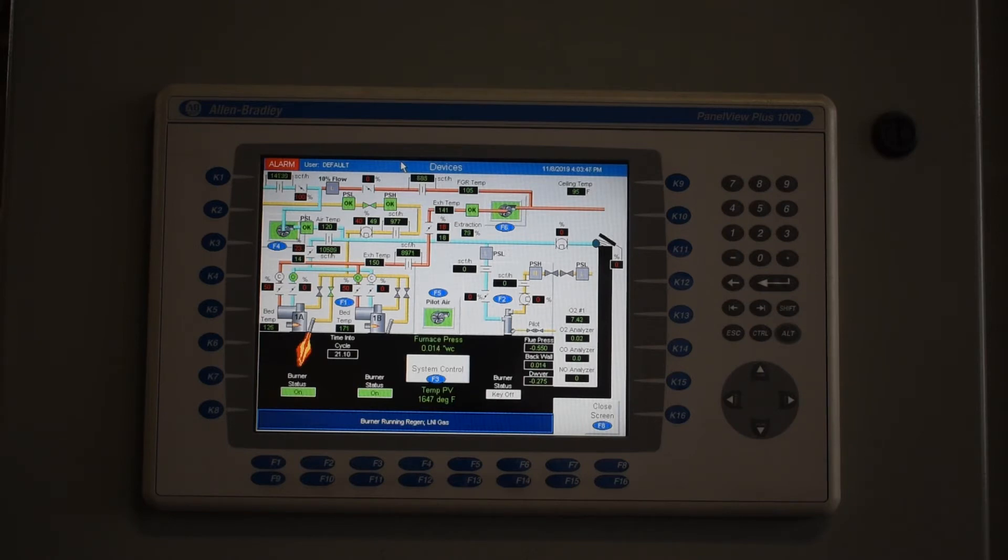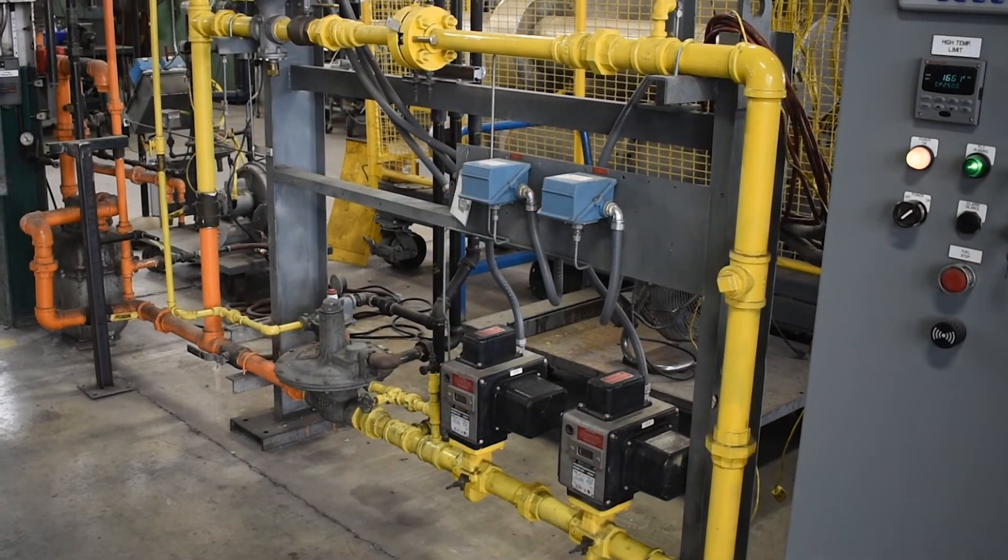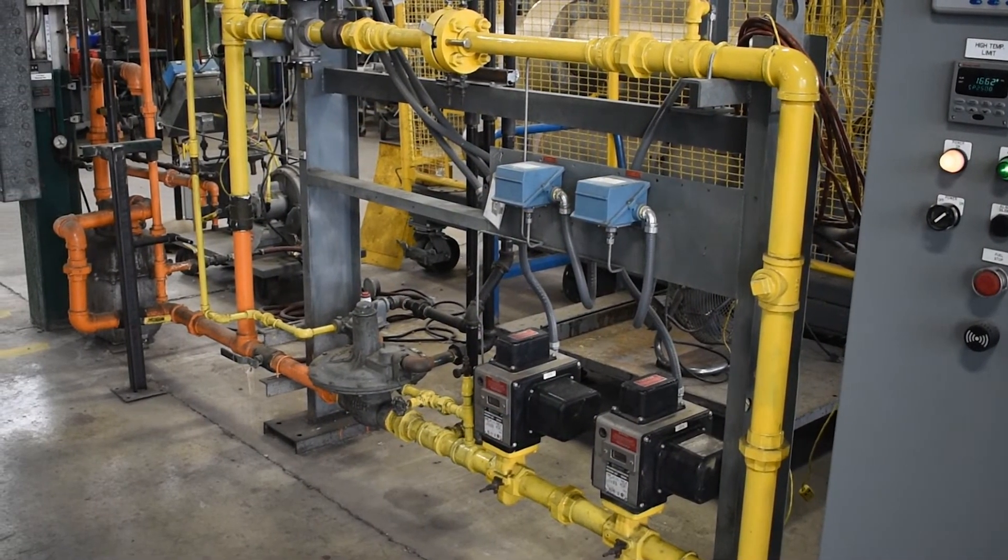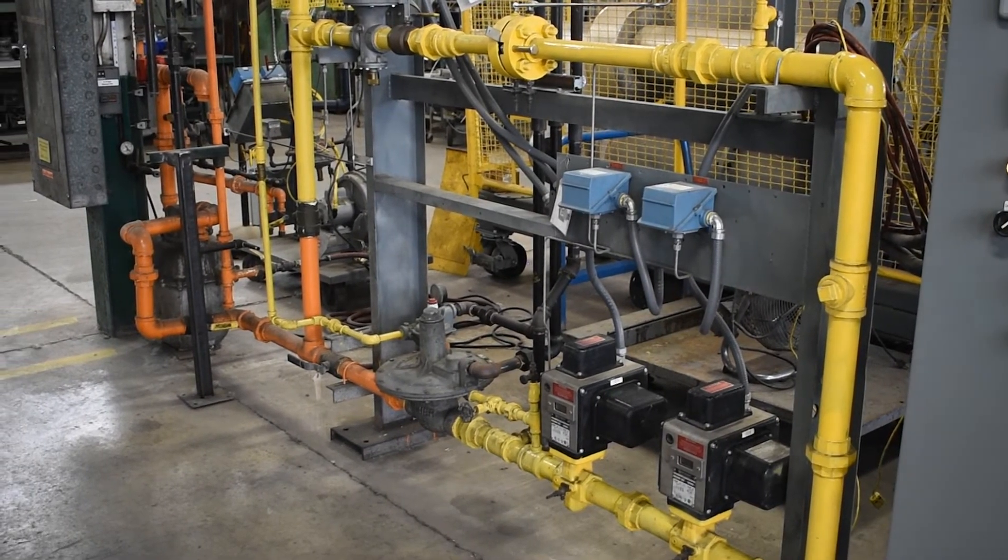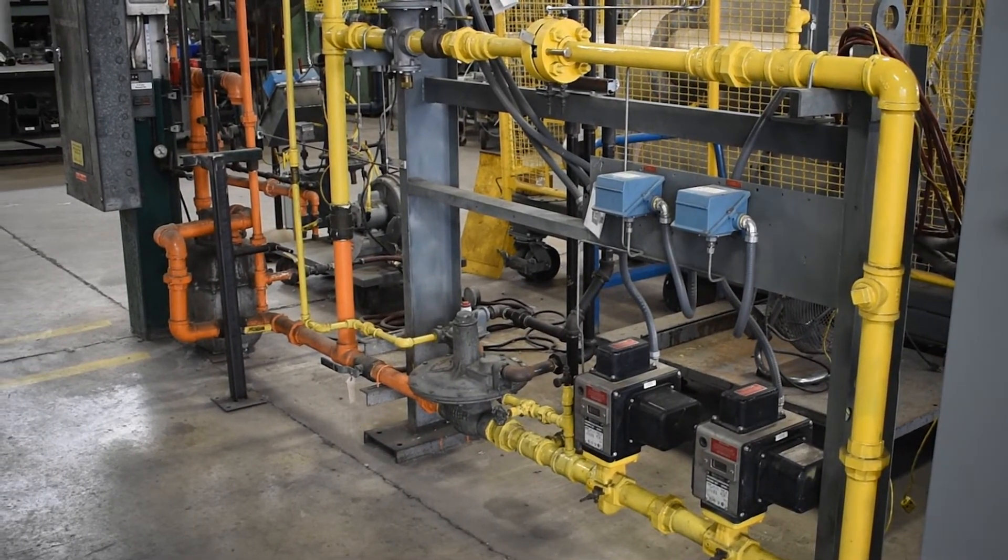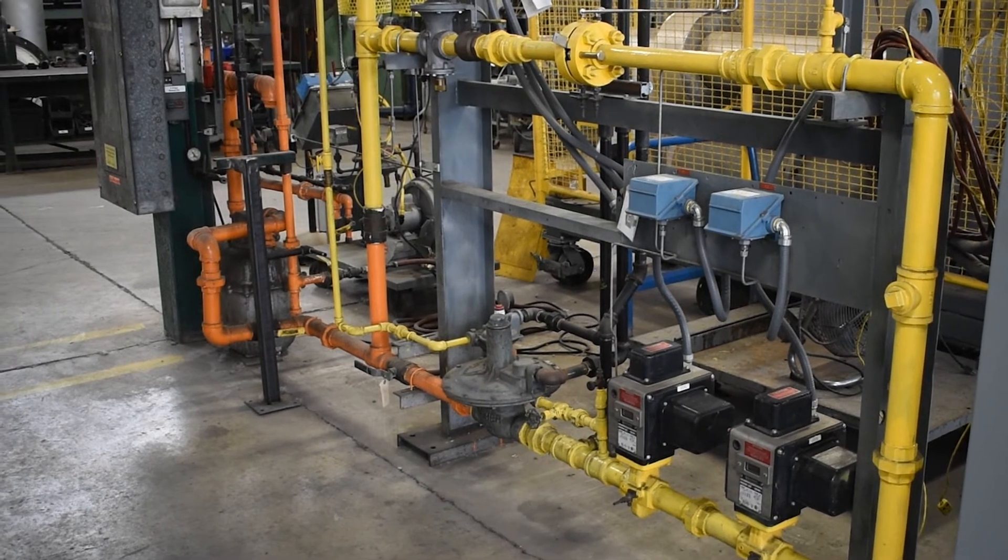To start the system, we begin with the purge. The purge flows combustion air through all air piping to ensure no combustibles are present in the piping or chamber. Four volume changes will be done in accordance with NFPA 86 guidelines. Once the purge is complete, the burners can be started.